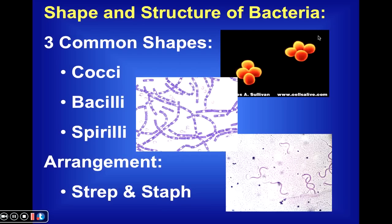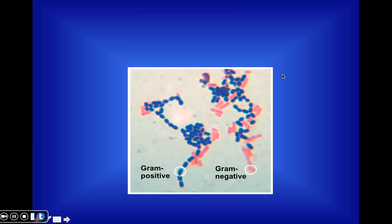Streptococcus refers to the fact that its cells are spherical — cocci — and in a strep arrangement. You also might have heard of MRSA, methicillin-resistant Staphylococcus aureus. Again, staphylococcus refers to cells that are spherical in shape and arranged in clusters.